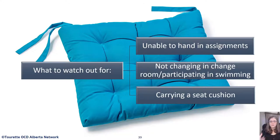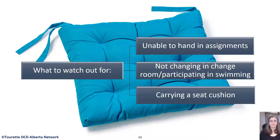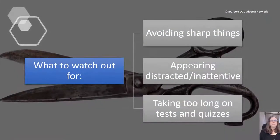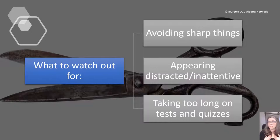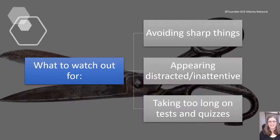Other signs: unable to hand in assignments — my kids would finish an assignment and not be able to hand it in because it wasn't perfect yet. Not changing in the change room or participating in swimming due to contamination fears. Carrying a seat cushion for non-medical reasons. Avoiding sharp things like compasses, pens, pencils, and scissors. Students can also appear distracted or inattentive — I thought that about my son. He appeared to be refusing to work, but really he was thinking things over and over in his head. Taking too long on tests and quizzes due to checking and rechecking is a classic sign that something may be going on.